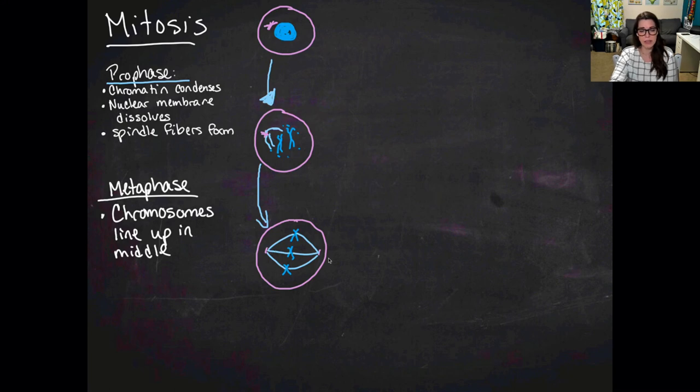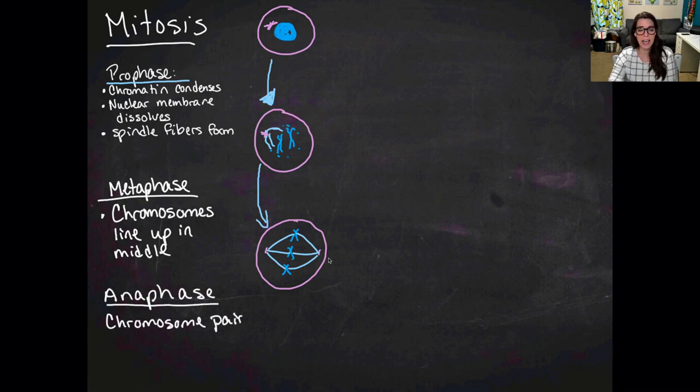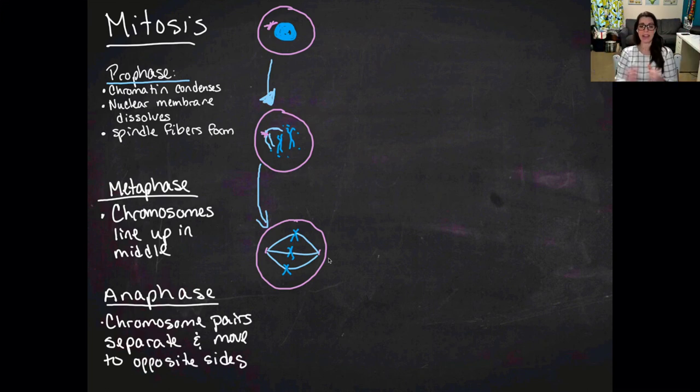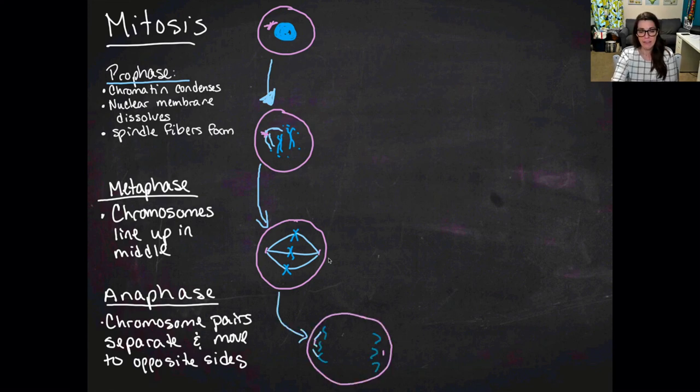So that's metaphase. After metaphase, you have anaphase. And in anaphase, the chromosome pairs pull apart, they separate, and they move to opposite sides of the cell. So in anaphase, anaphase away, my chromosomes have separated and they've moved to opposite sides of the cell.